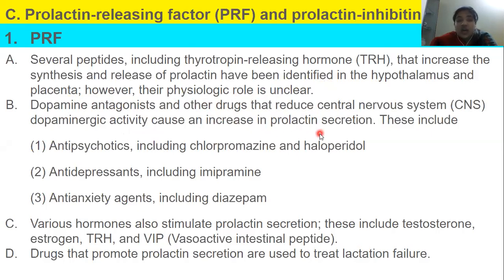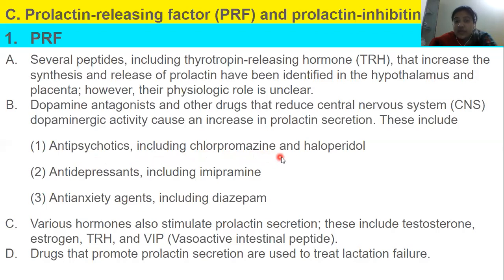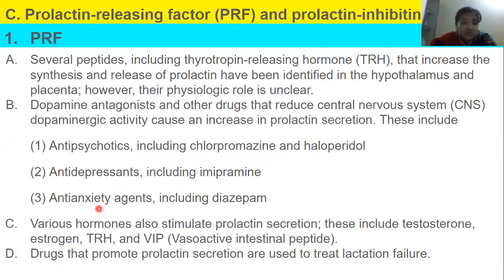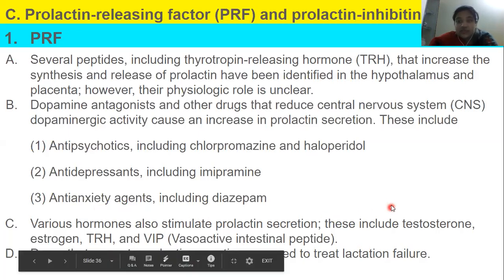The key correlation to remember: drugs that diminish dopamine release and activity will increase prolactin secretion. These drugs include antipsychotics such as chlorpromazine and haloperidol, antidepressants such as imipramine, and anti-anxiety drugs such as diazepam. Various hormones also stimulate prolactin secretion, including testosterone, estrogen, TRH, and VIP — vasoactive intestinal peptide. Drugs that promote prolactin secretion are used to treat lactation failure, especially in mothers with newborns who are unable to lactate.